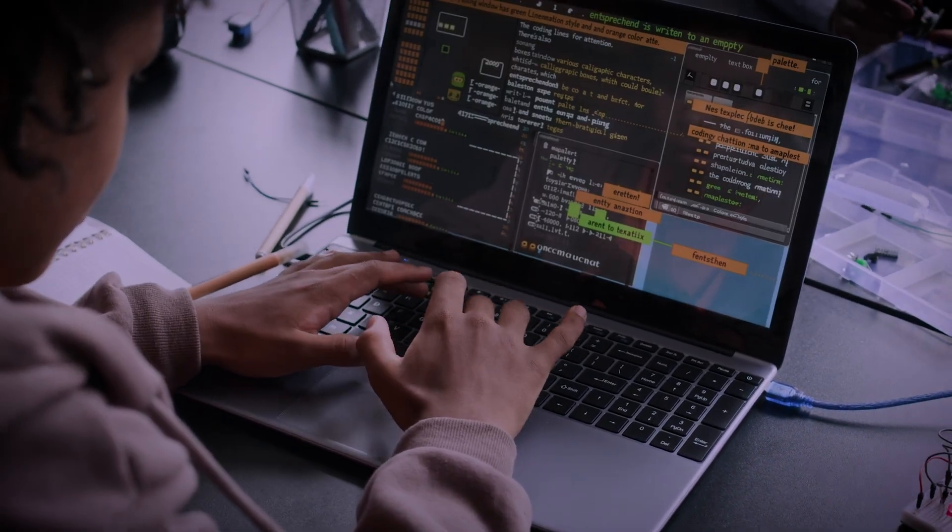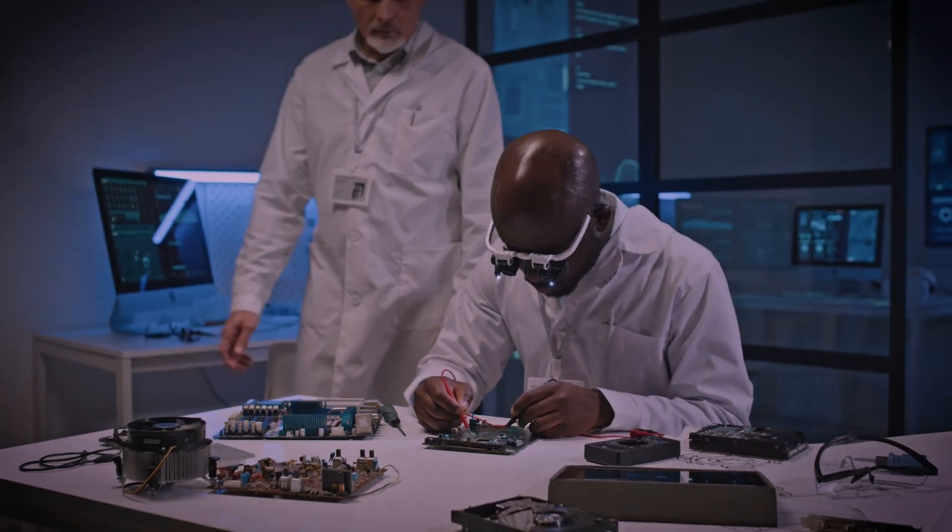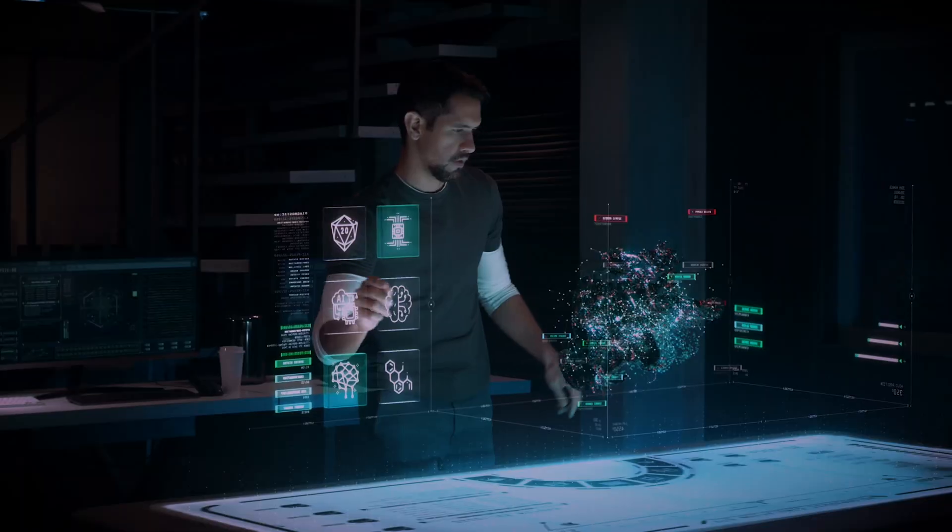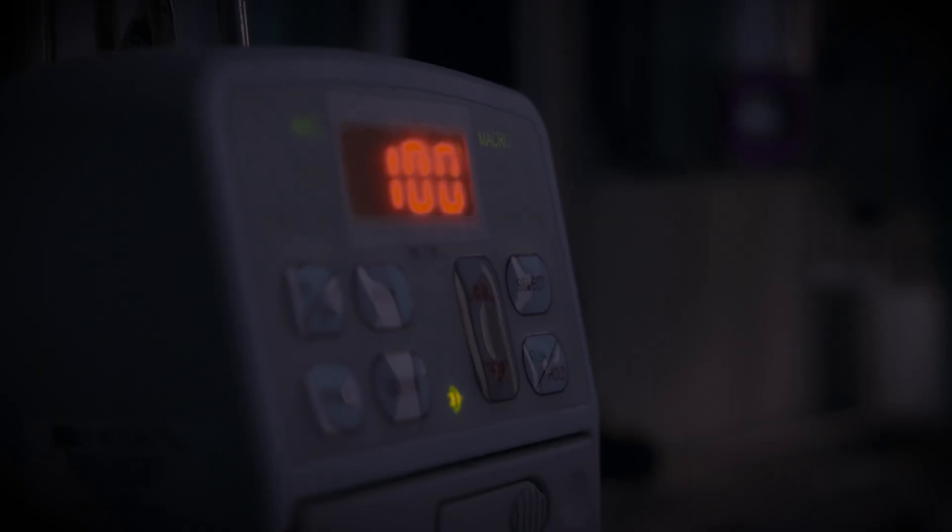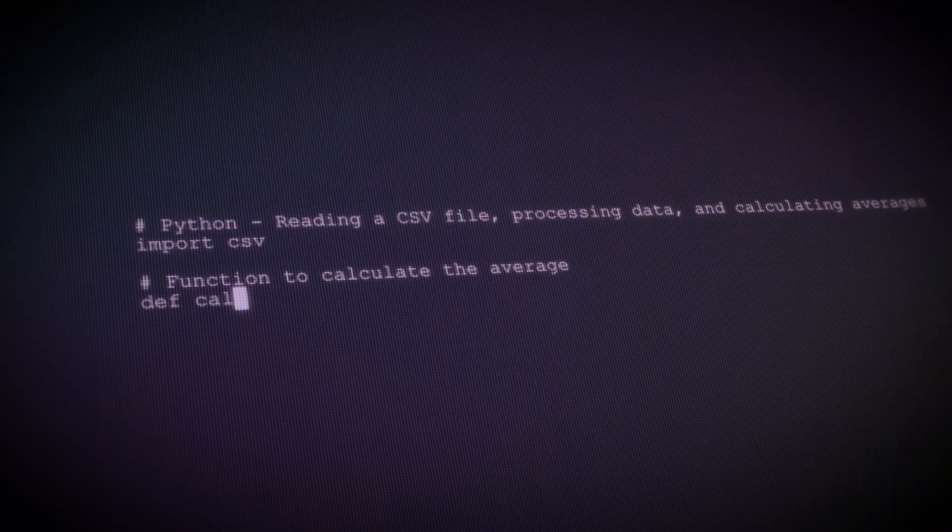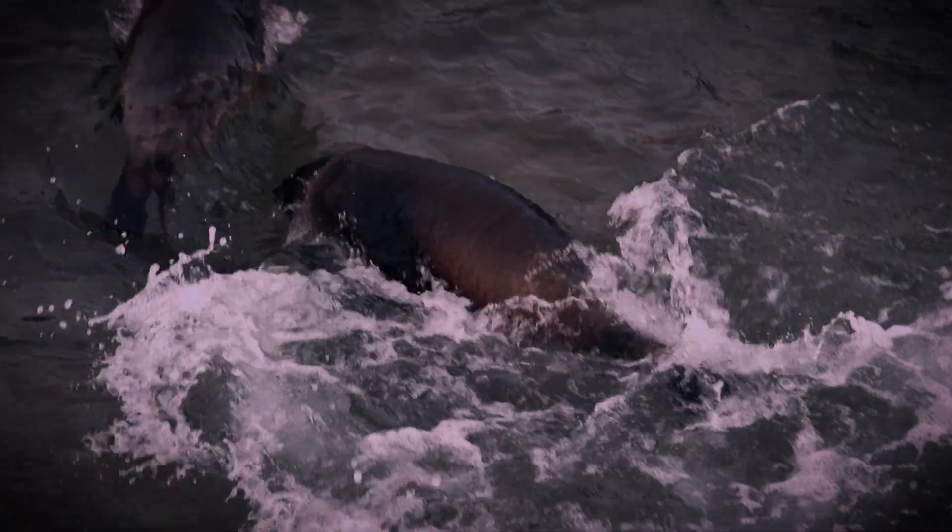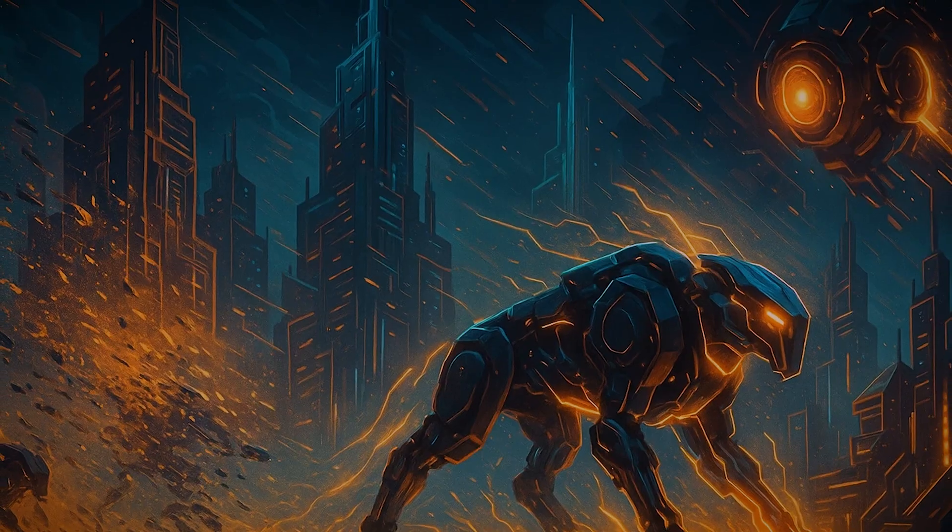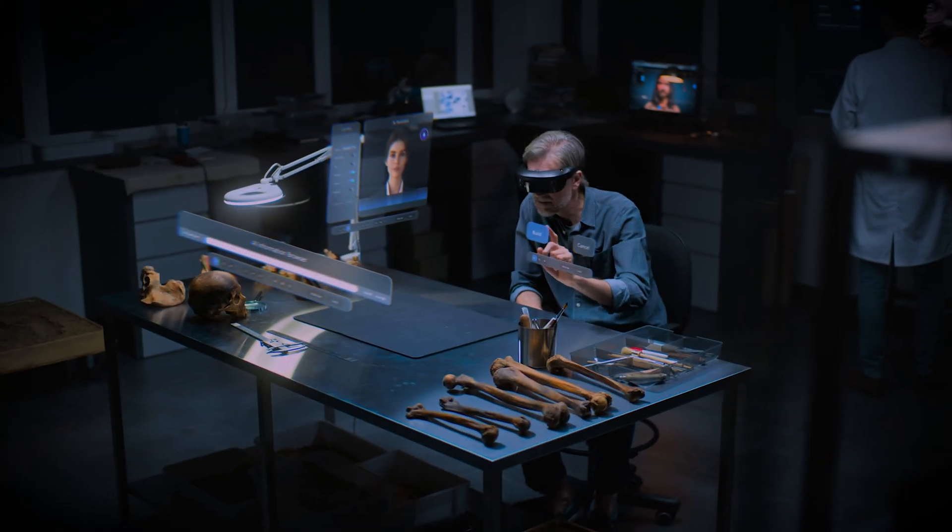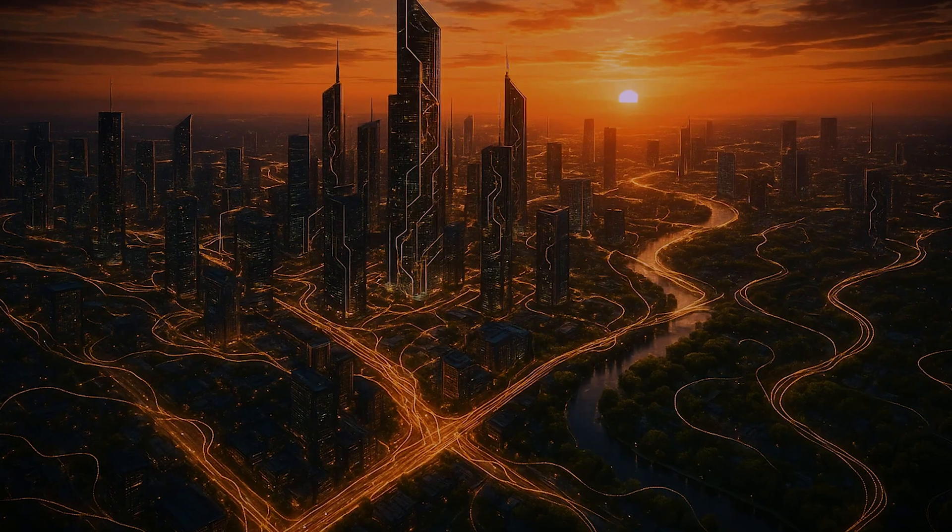This is the mind-bending world of generative design. It's a radical new partnership between human and machine. An engineer doesn't draw the part anymore. Instead, they act as a teacher. They tell the AI the rules of the game. Here are the points where the part needs to connect. It can't weigh more than this, and it needs to withstand this much force. Then the AI takes over. It explores thousands, sometimes millions of possible designs, constantly refining and improving. It's like running evolution on hyperspeed where only the fittest, most efficient designs survive. The results are often completely counterintuitive and look more like natural bone growth than anything man-made.